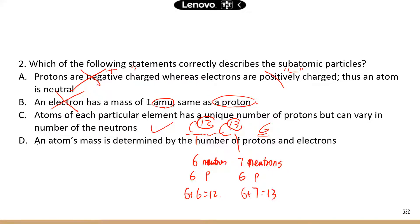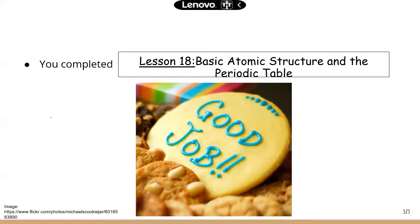Last statement: an atom's mass is determined by the number of protons and electrons. By this point you should know very well that electrons do not count toward the atomic mass. Correct answer is C. All right guys, we finished another lesson. We're getting close to the end. We have probably a couple lessons left in the life and physical sciences and then a few lessons in the scientific reasoning, so we're almost there. Keep up the good work. I'll see you next time.